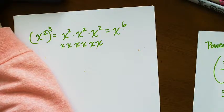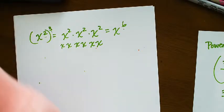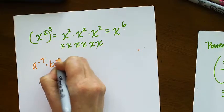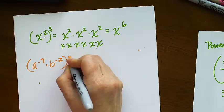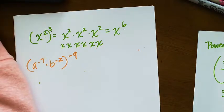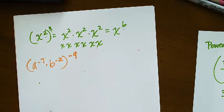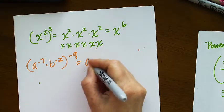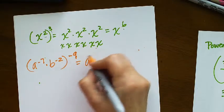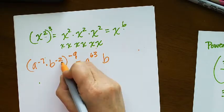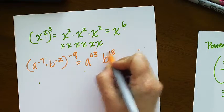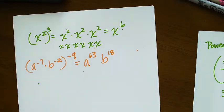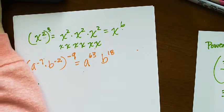Okay, let me see what is next. I've got a to the negative 7 times b to the negative 2 raised to the negative 9. So I'm going to raise the power to a power by multiplying those exponents. So that's going to be a to the positive 63 times b to the positive 18. Just multiplying negative 2 and negative 9, negative 7 and negative 9. And that's it. There's nothing else that you can do there.